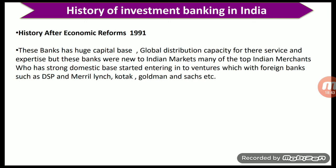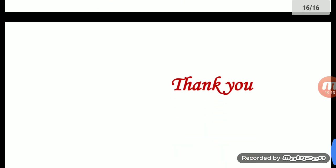Many foreign investment banks started entering the Indian market. These banks had huge capital bases, global distribution capacity, and expertise, but were new to Indian markets. Many of the top Indian merchant banks, which had strong domestic bases, started entering into joint ventures with foreign banks, such as DSP and Merrill Lynch, Kotak and Goldman Sachs, and JP Morgan partnerships. That was a brief history of investment banking in the world and in India — a short review of the evolution of investment banking. Thanks for watching; see you in the next lecture.